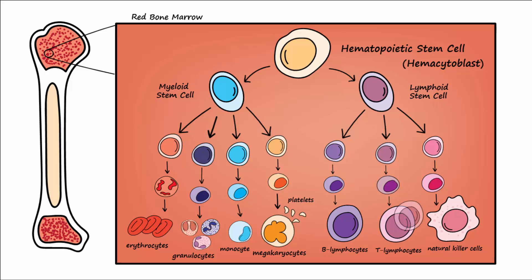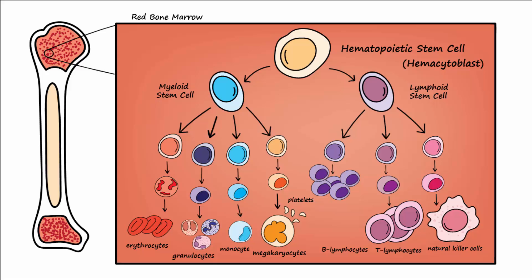Note that this process of proliferation and differentiation known as hematopoiesis is continually happening. However, sometimes certain cells in the process fail to differentiate and simply proliferate instead. This disruption may occur when there is a translocation, inversion, or deletion of a gene or genes involved in controlling the regulation of blood cell growth and development.